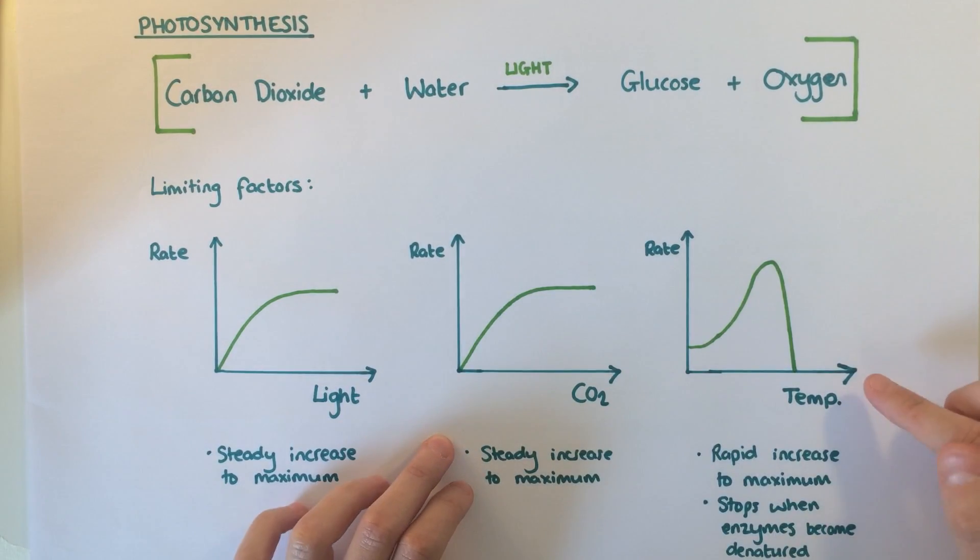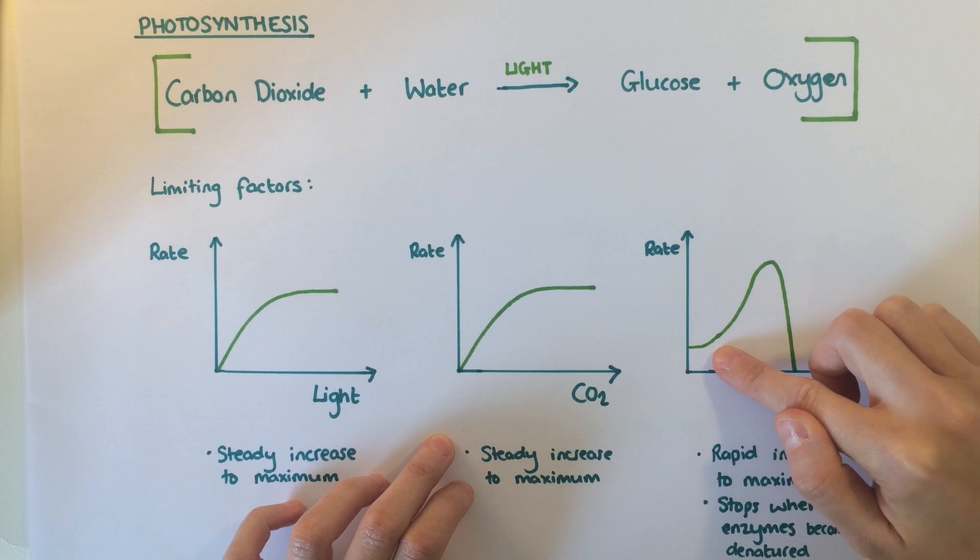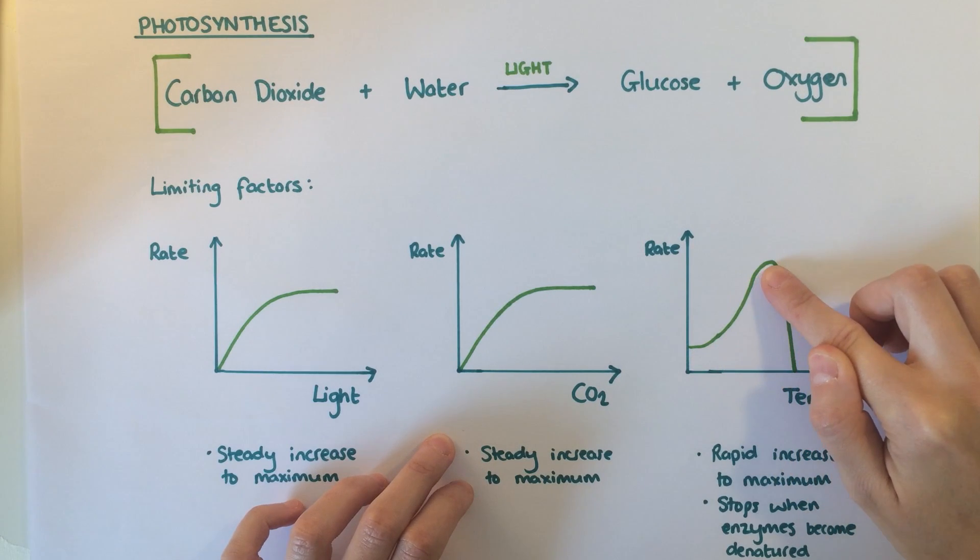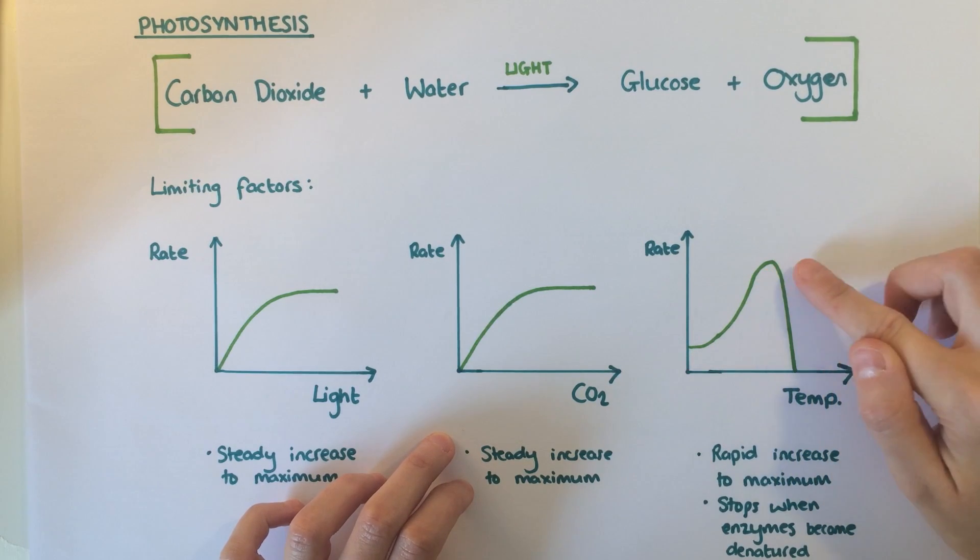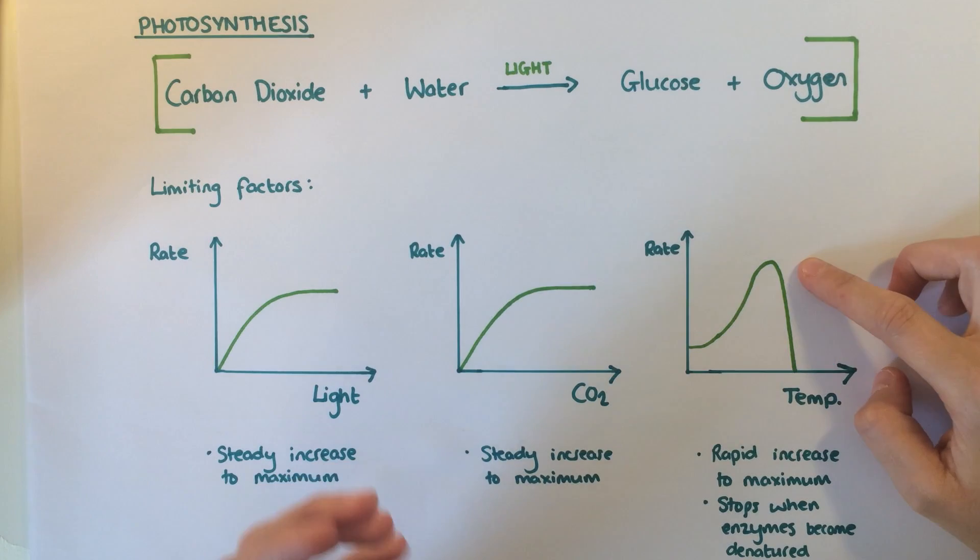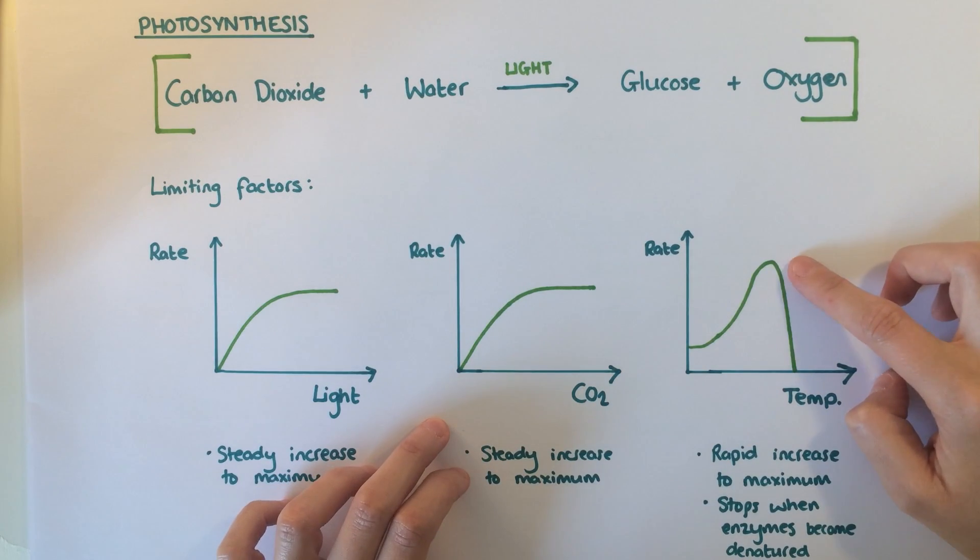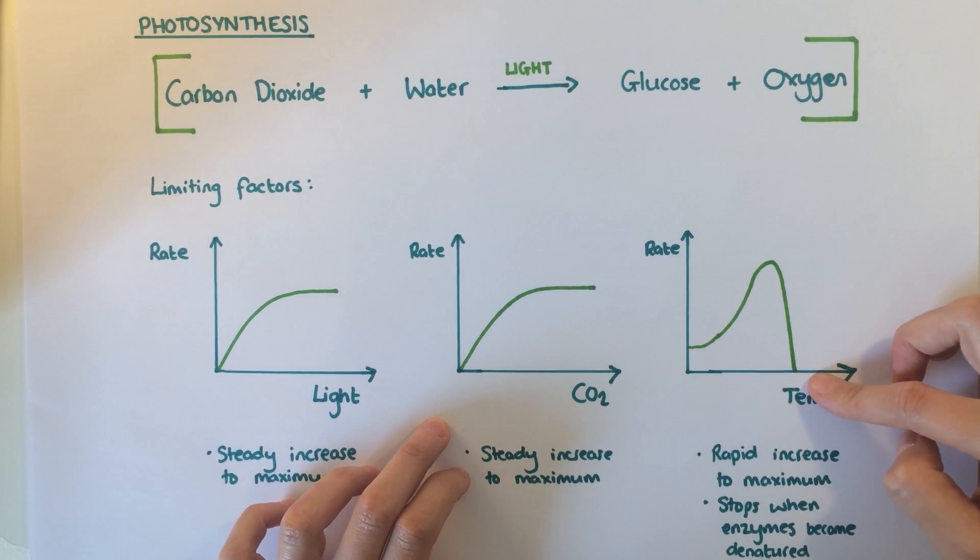Temperature has a different effect. As temperature increases, the rate of photosynthesis increases to a maximum. This means there is an optimum temperature for photosynthesis, around about 40 degrees. Beyond this, the rate drops off quickly and photosynthesis stops. This is because the enzymes have become denatured.